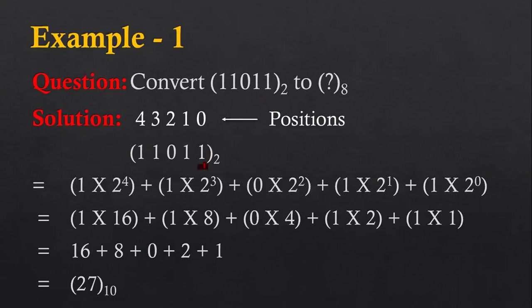The first digit is at position 0, the second digit is at position 1, the third at position 2, the fourth at position 3, and the fifth digit is at position 4. These positions are multiplied using the formula where the digit is multiplied with its base raised to its position. So, 1 × 2⁴ — here 2 is the base and 4 is the position. Similarly, all the digits are multiplied.